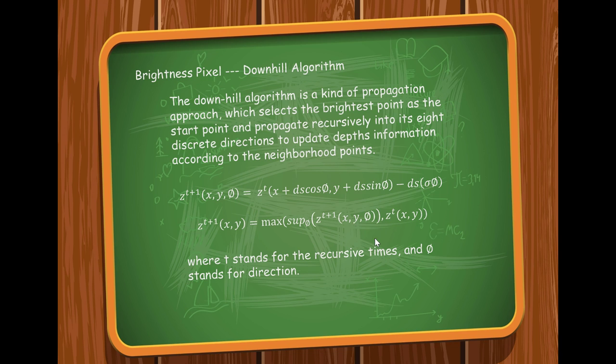Now let's introduce the famous downhill algorithm. This is a kind of propagation approach, which selects the brightest point as the start point, and propagates recursively into its eight directions to update depth information according to the neighborhood points. The iteration will continue until the whole image is complete. In this algorithm, the depth of initial point is fixed. It will find the minimal downhill direction and compute the corresponding Z value using these two functions. You may see from here, t stands for the recursive times and phi stands for directions.